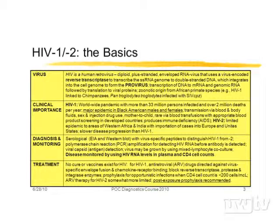This is a worldwide pandemic with over 33 million people currently living with HIV infection and about 2 million deaths per year. In the United States in particular, this is a major epidemic in the Black American population. Transmission is via blood, body fluids, sex, injection drug use, mother-to-child transmission, and rarely now by blood transfusions because of screening of blood products by nucleic acid methods.